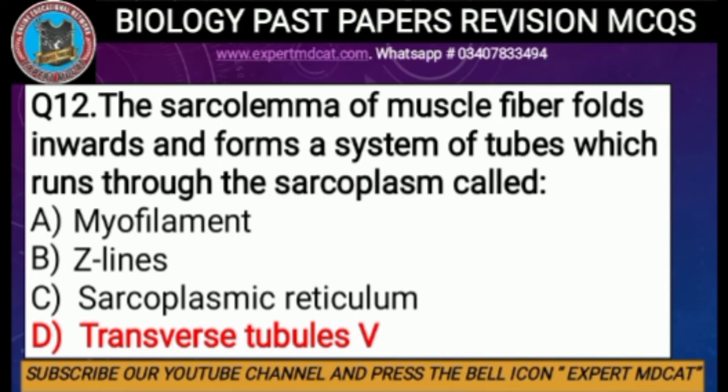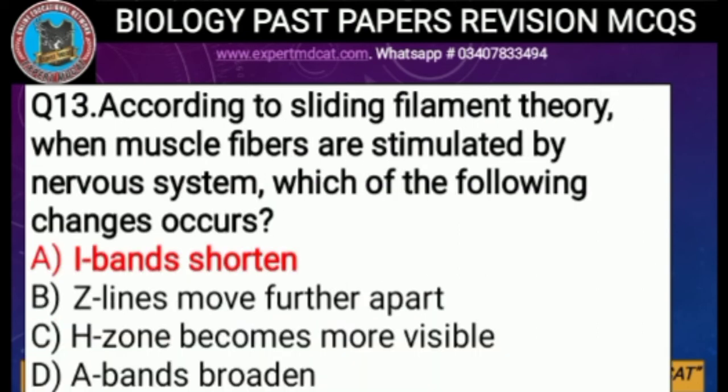Question number twelve: the sarcolemma of a muscle fiber folds inward and forms a system of tubes which runs through the sarcoplasm, called — options are myofilament, Z lines, sarcoplasmic reticulum, or transverse tubules. The correct option is D, transverse tubules, because inward folds in sarcolemma are called transverse tubules.